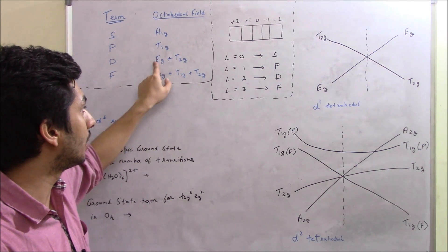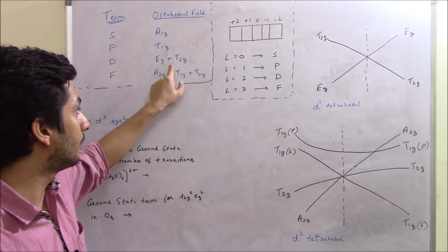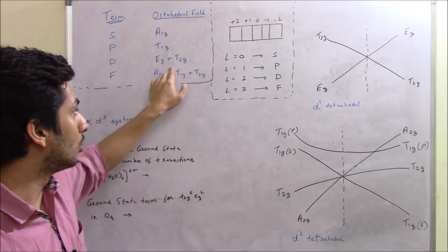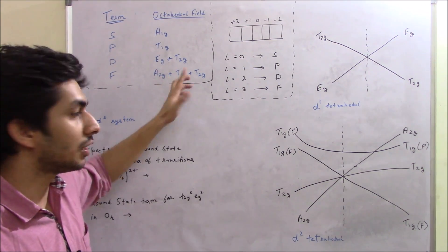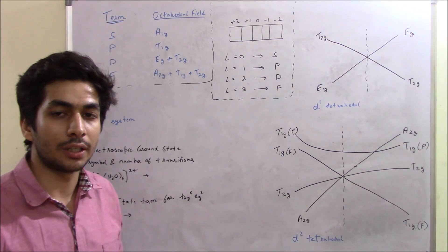In tetrahedral fields, just remove the 'G' because tetrahedral compounds have no center of symmetry. So you write A1, T1, E, T2 for S, P, D terms, and A2, T1, T2 for F term — nothing else.